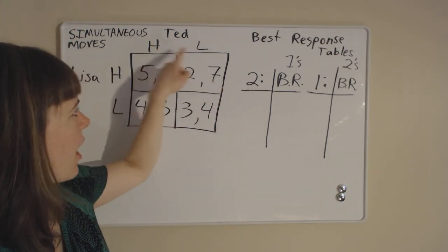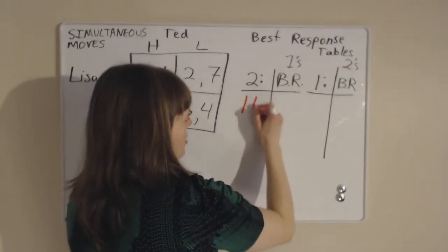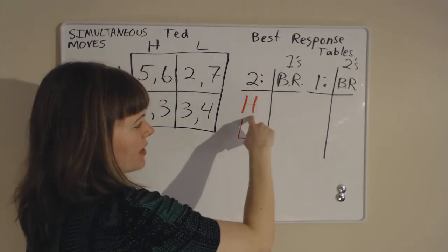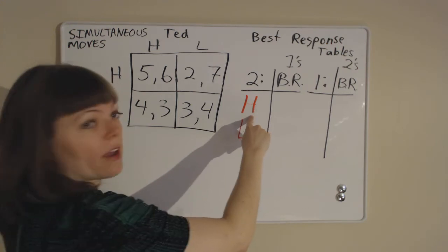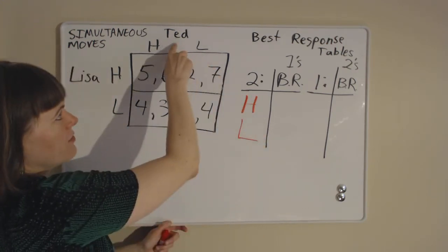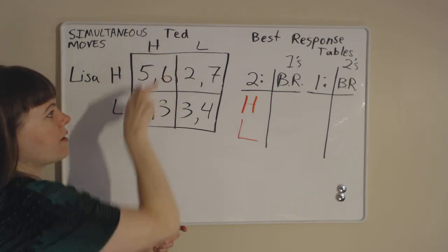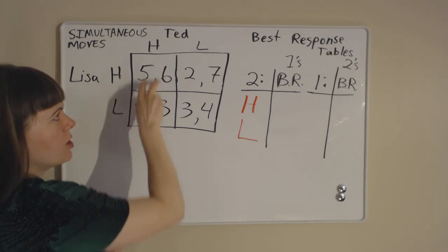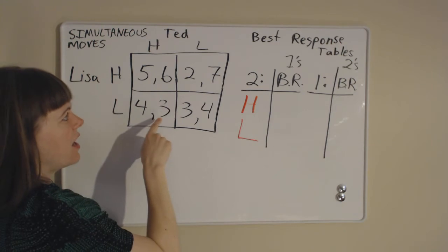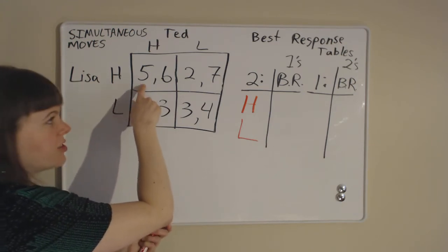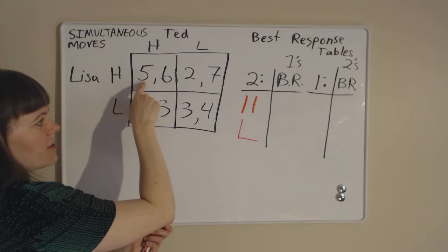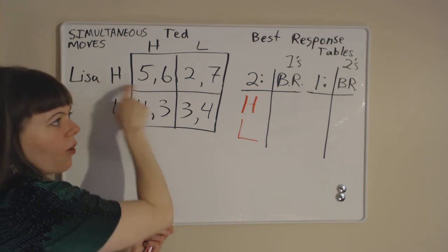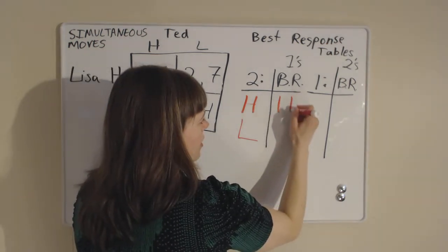Player two's strategies are to go high or to go low. Lisa, player one, needs to think: what is my best response if Ted chooses high? If Ted chooses high price, we know we're in one of these two boxes, and Lisa is choosing between them. She looks at her payoff — the first payoff since she's player one — and she compares the five to the four and likes the five better. So her best response is to go high if Ted goes high.